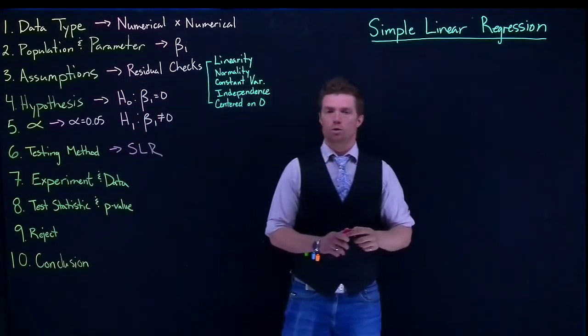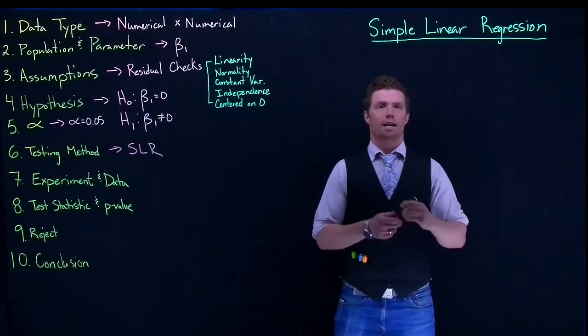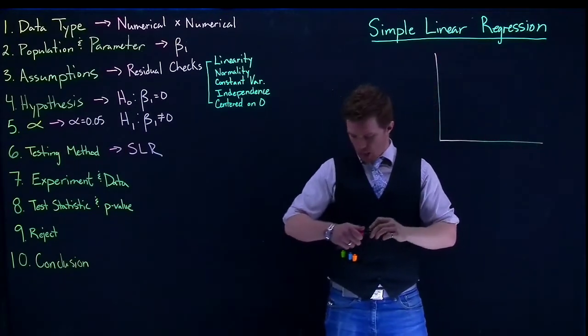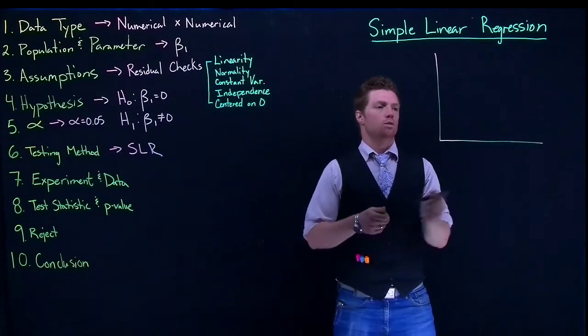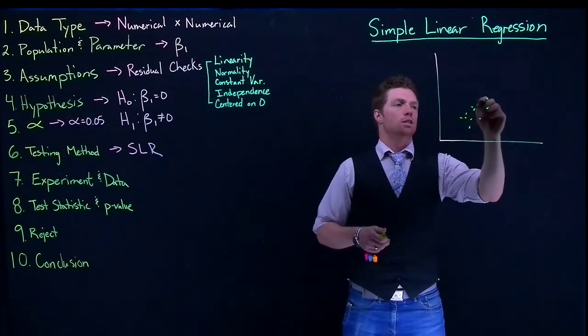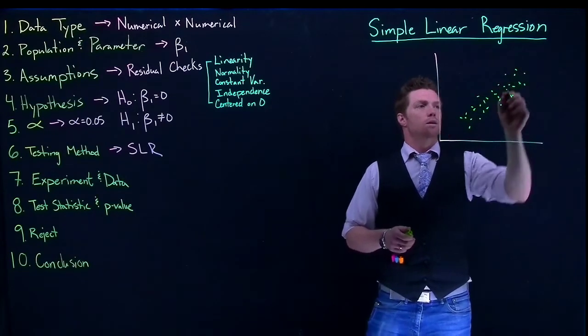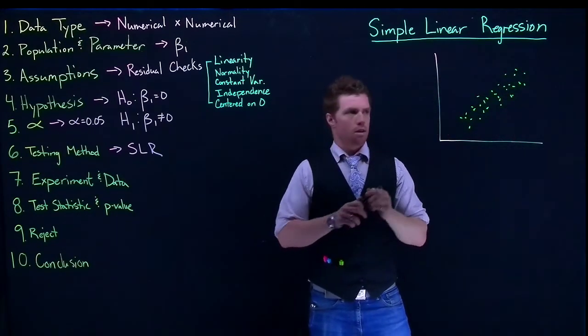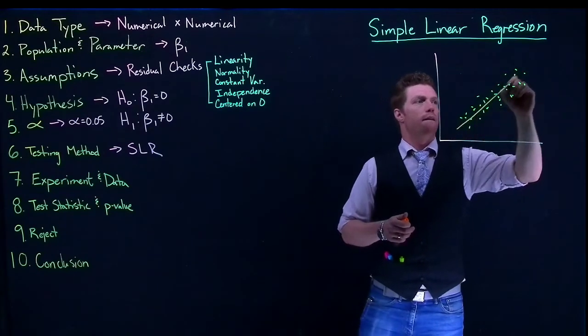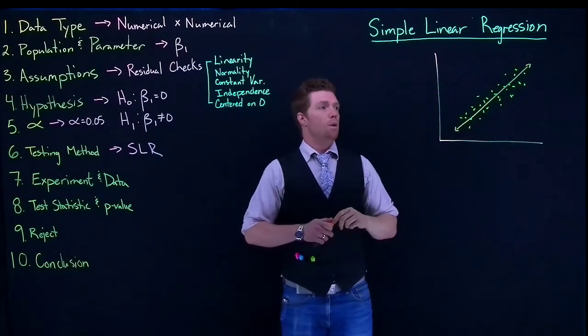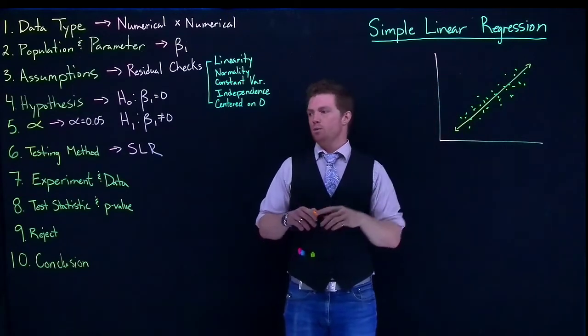And then we need to go do our experiment and collect our data. So when we did that, we'd then be able to do our plot, and we could suppose that our regression data collection and our experiment, we got data that looks like this, and we had some sort of model that comes out to be like this.